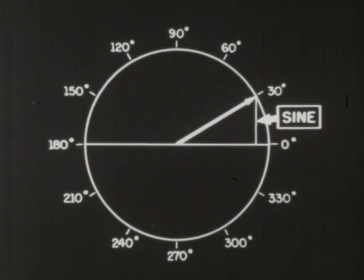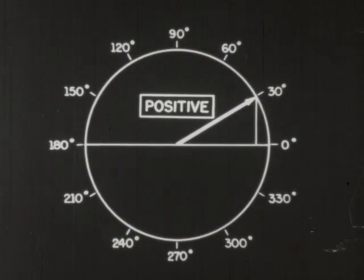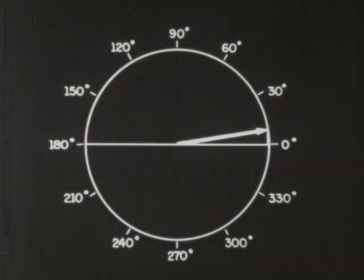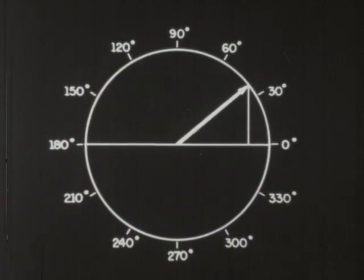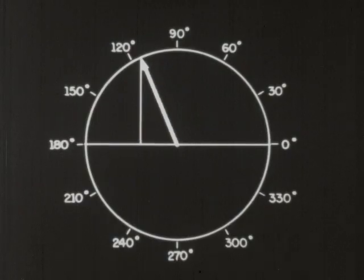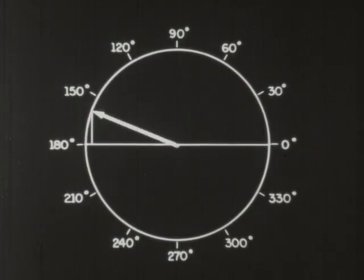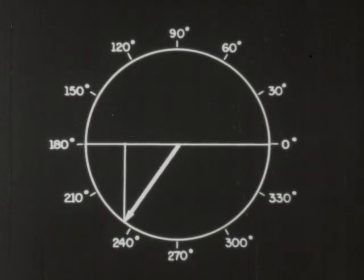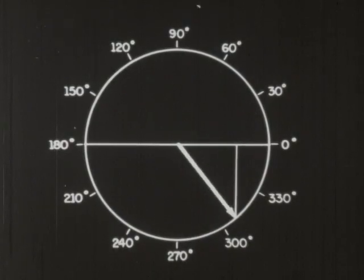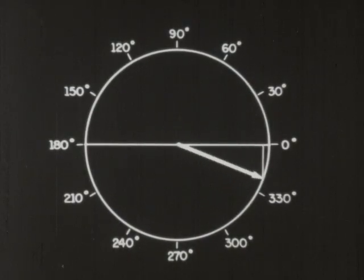Any sine measured in the upper half of the circle is positive. Any sine measured in the lower half is negative. As the vector makes a complete revolution, the sine increases, then decreases to zero, then begins to increase in a negative direction, and finally decreases to zero again — all this in one revolution.